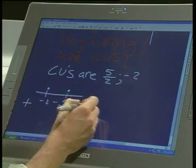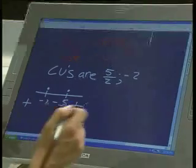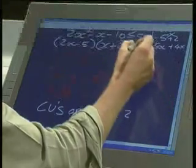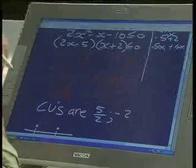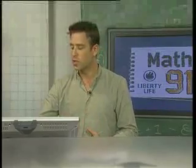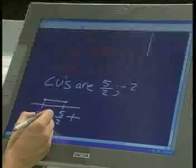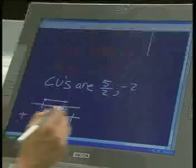And remember, if you have no repeated CVs, or in other words, no repeated critical values, your signs will alternate. And in this case, the answer, because smaller than or equal to 0 means negative, anything smaller than 0 means negative, I'm looking for the place where I have negatives. And the answers to that will actually lie between -2 and 5/2.